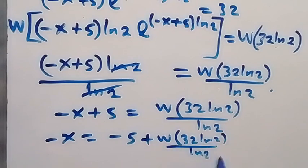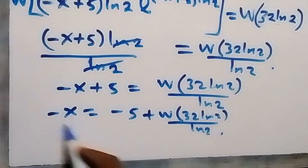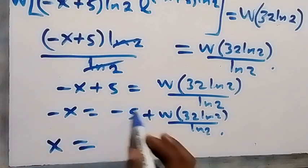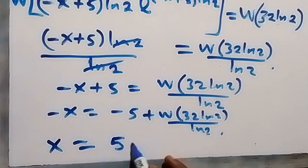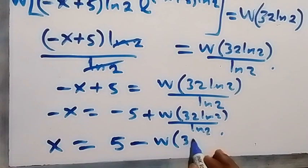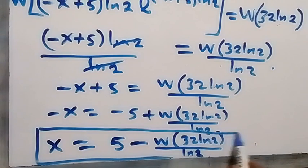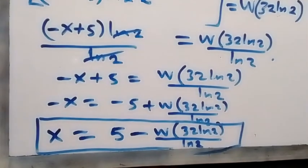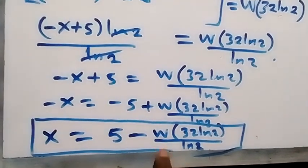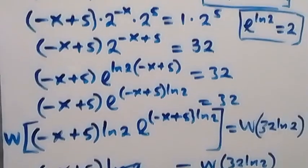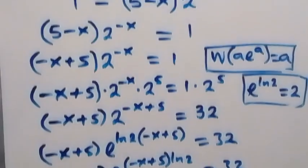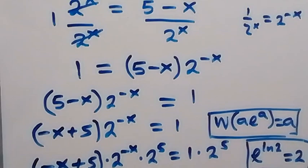Multiplying through by minus 1 to remove the negative sign, we get x equals 5 minus W of bracket 32 ln 2 over ln 2. So here we have the solution to this problem: x equals 5 minus W of bracket 32 ln 2, all over ln 2. Thank you for watching, don't forget to subscribe for more exciting videos, turn on the notification bell, comment, give a thumbs up, share. God bless you, see you next class.